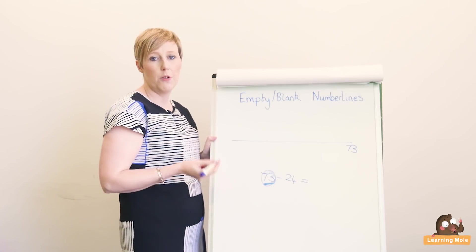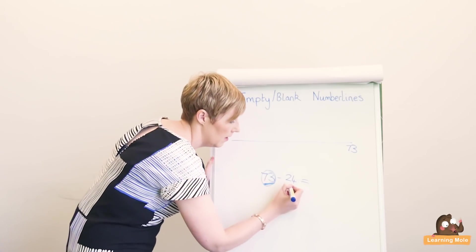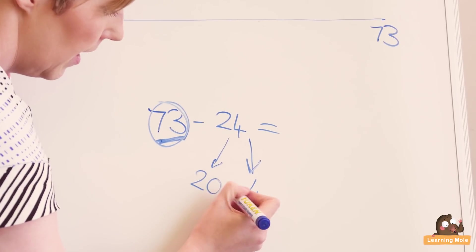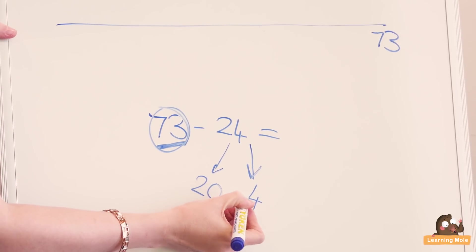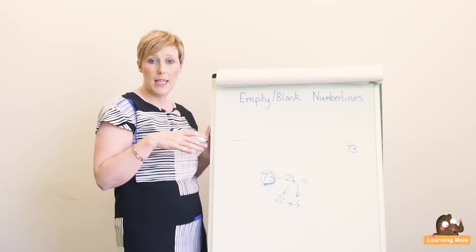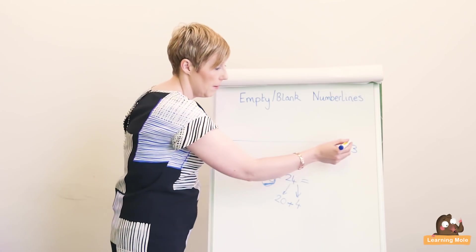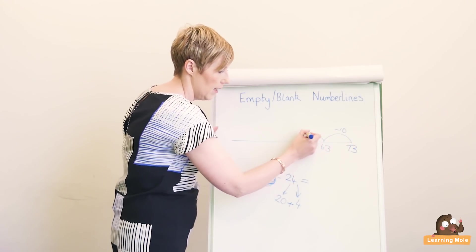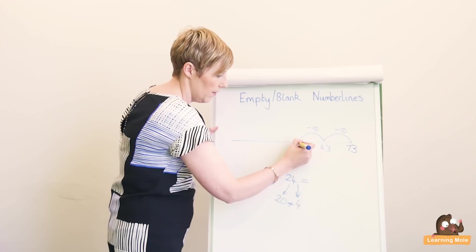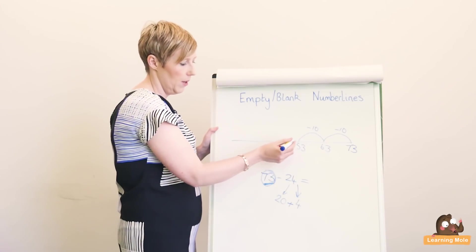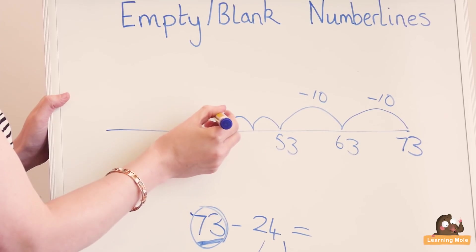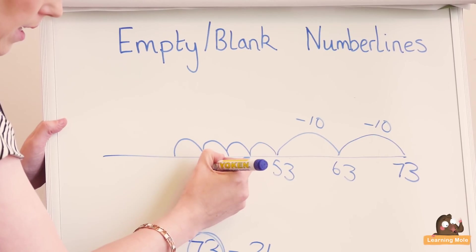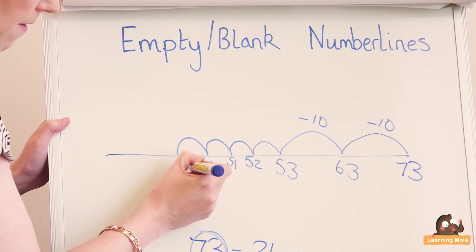I need to take away my 24. This is where I partition into my tens and units. I know that there's four and I know that there's 20, so I can even write it like that so it's really clear. 20—I can jump back 20, or I can jump back two tens. It might be easier for your child to jump back in 10s: 63, and 10, which is 53. And then jump back four: one, two, three, four—53, 52, 51, 50, 49.